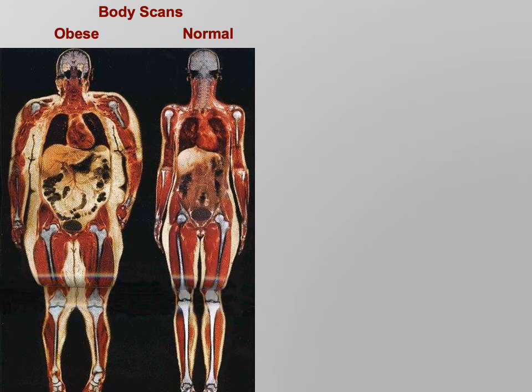There's a great slide here showing a body scan of an obese and a normal person. As you can see, body fat is put on all over the body - it doesn't just go to one place. These things you see on TV about reducing belly fat with grapefruit pills - you don't have a choice where you reduce. Your body puts fat on in a certain order and takes it off in a certain order.